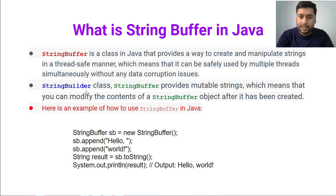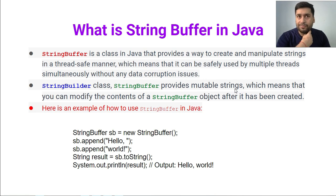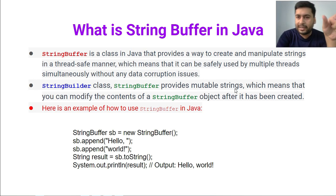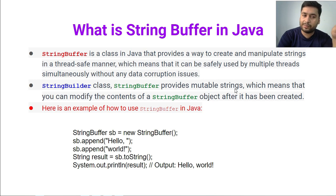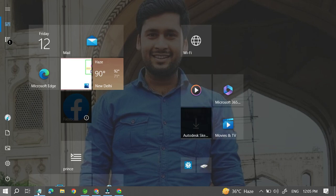Basically, StringBuffer and StringBuilder classes provide a mutable string. Mutable means — for example, if I create a String str equal to 'hello' and then try to concatenate 'hello world' using the plus operator, it will create a new String object. But if you go with StringBuffer or StringBuilder, it will not create a new String — it will modify the existing String only. That is the difference between mutable and immutable.